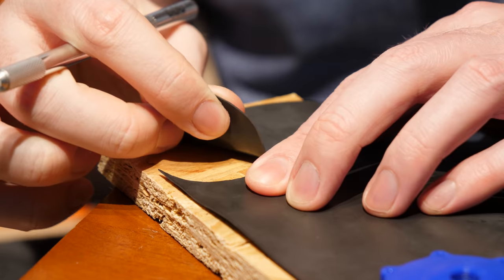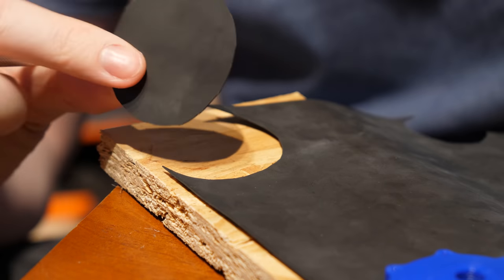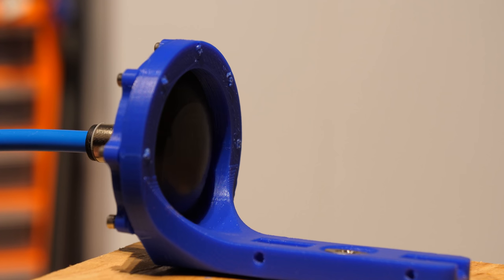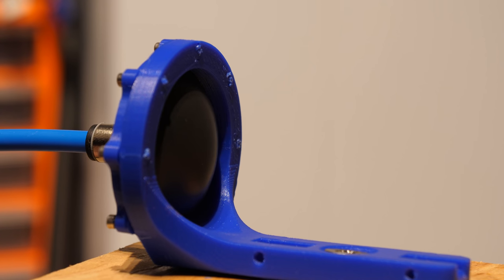A diaphragm is a disc of flexible material that is fixed around its outer edge, but is free to flex back and forth almost like a trampoline, but with an airtight seal.